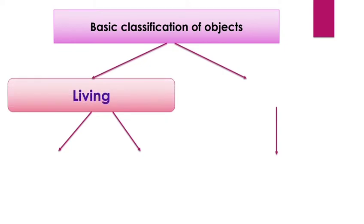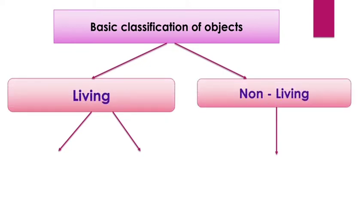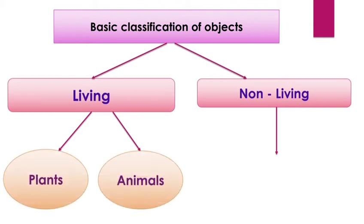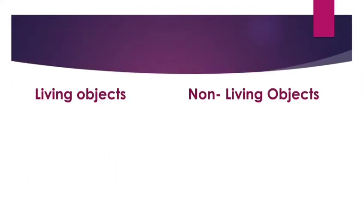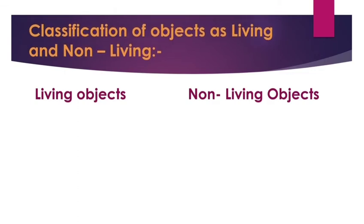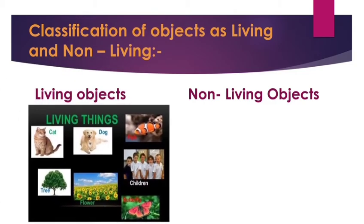Objects are basically classified into two categories: living and non-living. Living objects are further classified as plants and animals, whereas non-living objects are classified on the basis of the nature of their materials. As you can see in the picture, there are examples of living things like cat, dog, tree, flowers, fish, children, and butterfly.